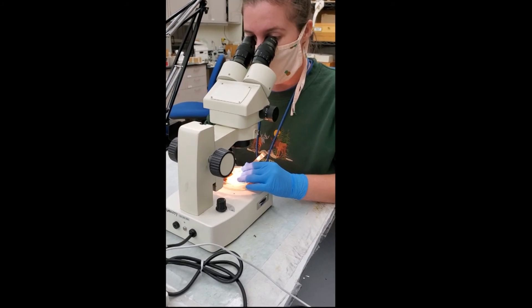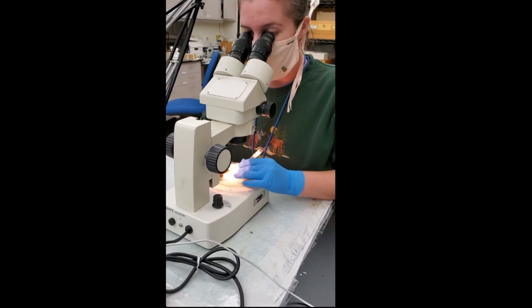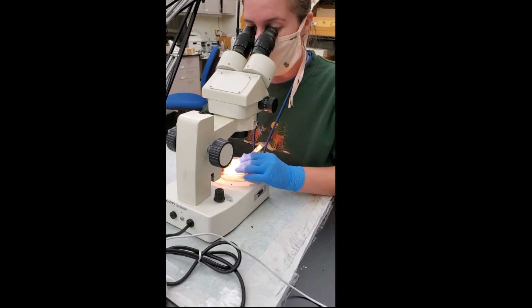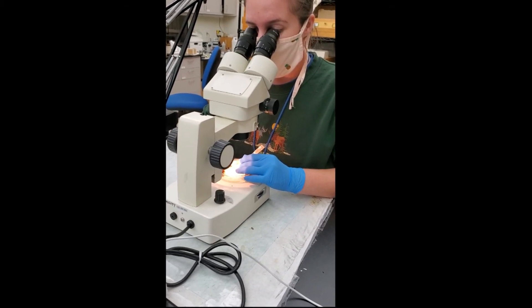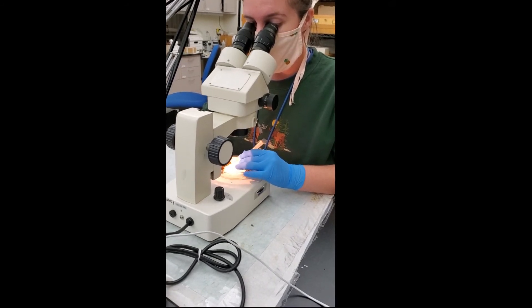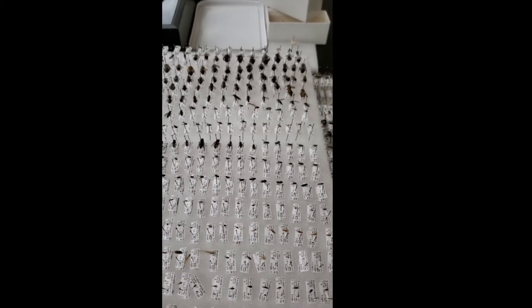Here, one of our employees is sorting through moth samples and determining if the moths are ones that we're worried about. The moth we're looking for is a bad pest on vegetable crops. You can see we get lots of insects in the trap.